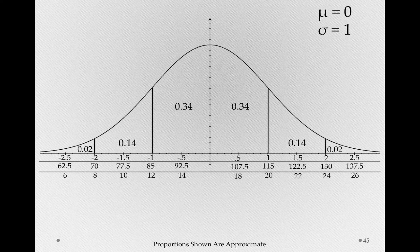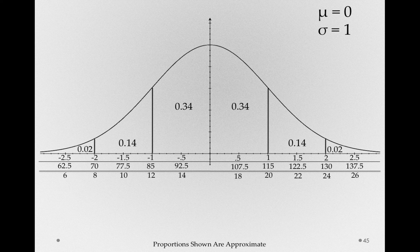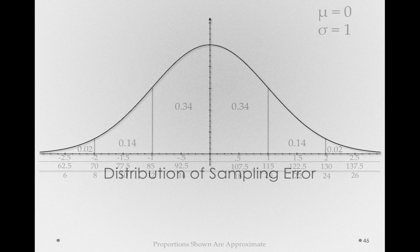Now, importantly for us, there's one very special thing in statistics that, under a wide range of conditions, will be normally distributed, and that is sampling error.